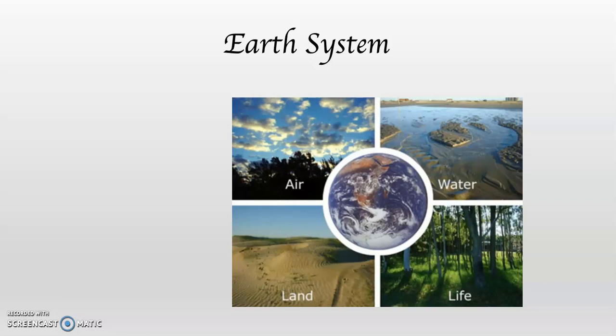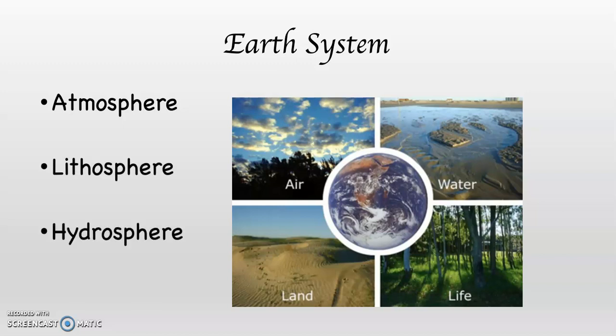This class is fundamentally about the Earth system, and the Earth system is an interrelated system. What that means is that each part is tied to the other parts. The Earth system has four components to it: the atmosphere, the lithosphere, the hydrosphere, and the biosphere.